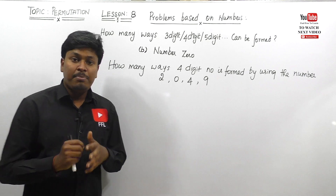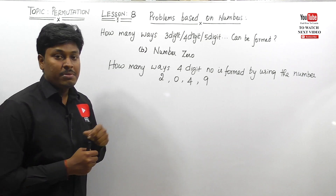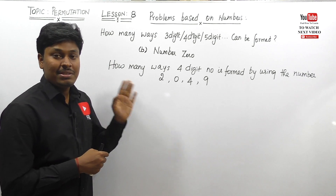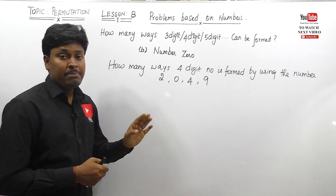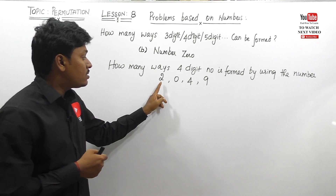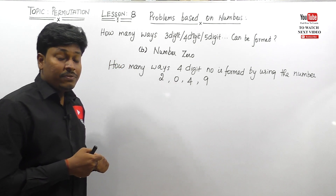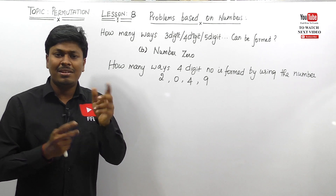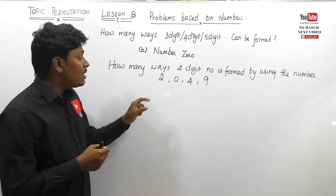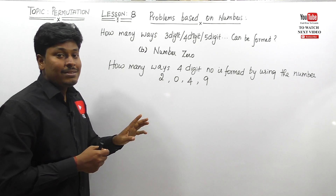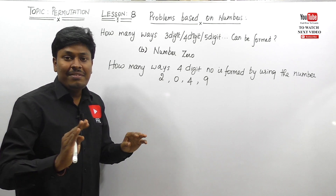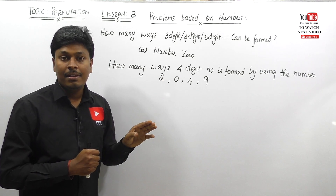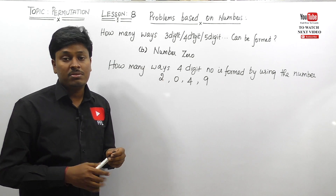Now let me move on to the most important concept in permutation. In many competitive exams, you will see this question: how many four-digit numbers can be formed using 2, 0, 4, 9? Most people answer four factorial, which is 24. That is exactly wrong.